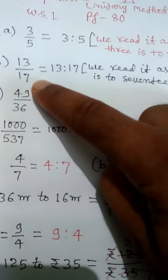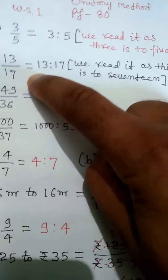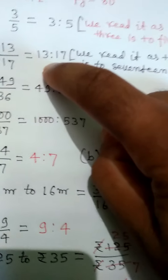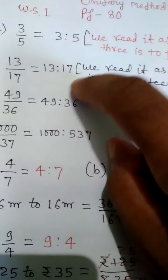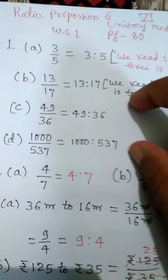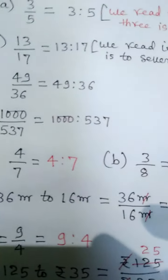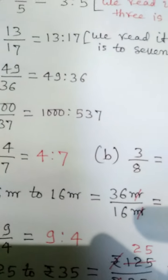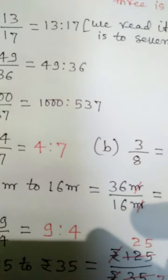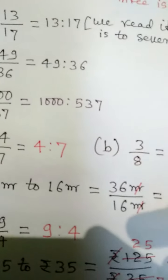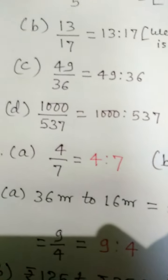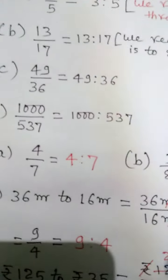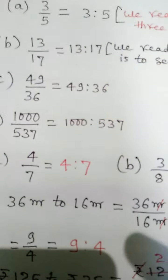When we write a fraction 13 by 17, it can be written as 13 is to 17. A fraction is in its lowest term when there is only one common factor in numerator and denominator, and that common factor is 1, the first natural number.